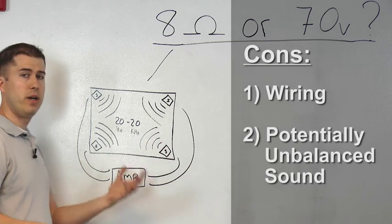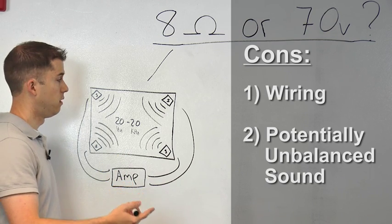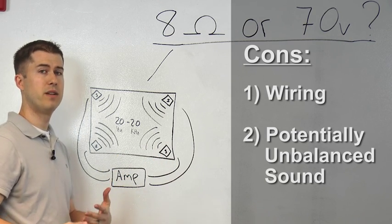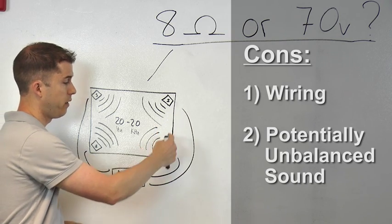And while stereo is a pro for 8 ohm systems, due to the separated nature of vocals and instrumentals, a listener may experience unbalanced sound if they're closer to one speaker than another.